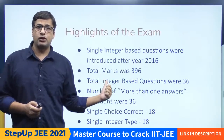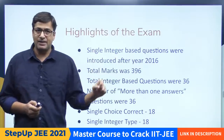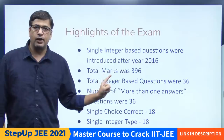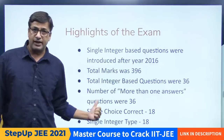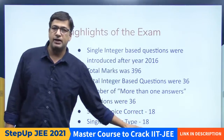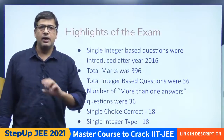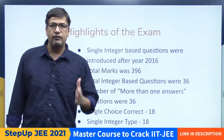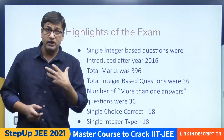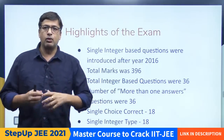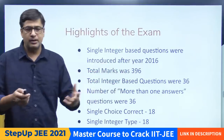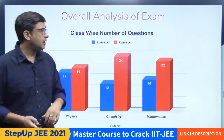Total number of integer based questions was 36 — including physics, chemistry, maths, paper 1 and paper 2 दोनों के। Total integer based questions जो आपने solve किये वो 36 थे। More than one choice questions भी 36 थे। Single correct choice was 18 and single integer type was 18 — यह 18 questions straight away difficult category में जाते हैं। Negative marking भी था और calculation भी काफी ज्यादा थी।